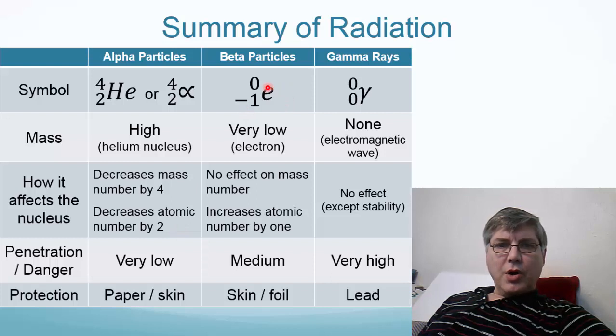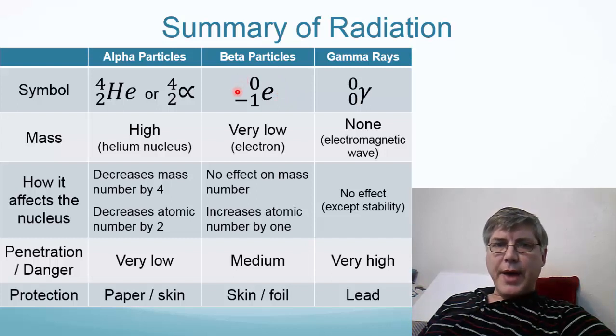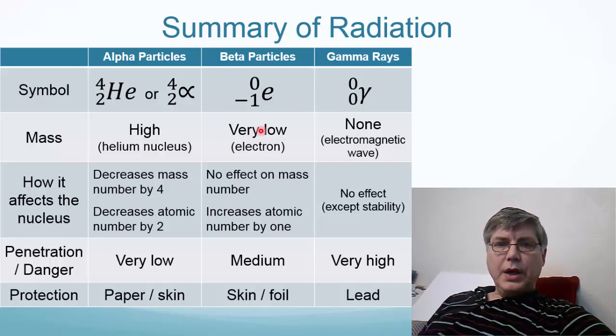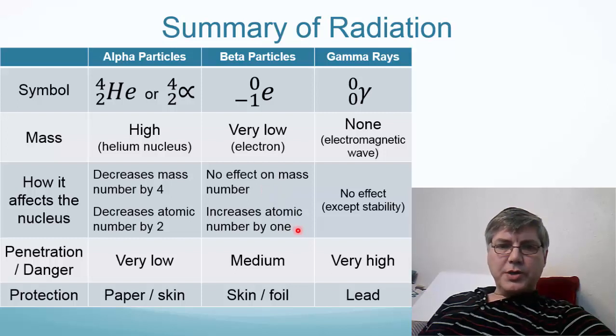Beta particles are symbolized in nuclear notation with an E for an electron, but we have a zero here for the mass number, indicating that it has no effect on the mass number of the atom, and a negative 1 to indicate that the number of protons goes up by 1 when it's emitted. It has a very low mass, and it has no effect on mass number, but it does cause the atomic number to increase by 1.